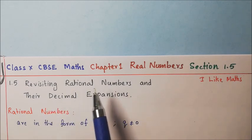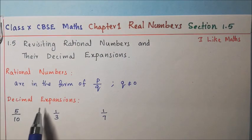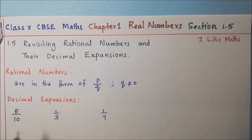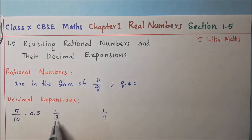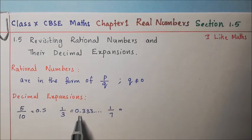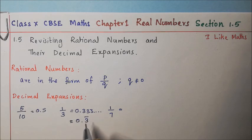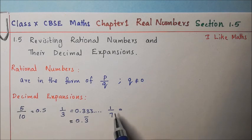We studied decimal expansions of rational numbers in Class 9. Let us recollect it. Consider three rational numbers: 5 by 10, 1 by 3, and 1 by 7. If we divide 5 by 10 we get 0.5. If we divide 1 by 3 we get 0.333, which is a non-terminating number. We denote this as 0.3 bar, where the bar indicates that this digit repeats endlessly.